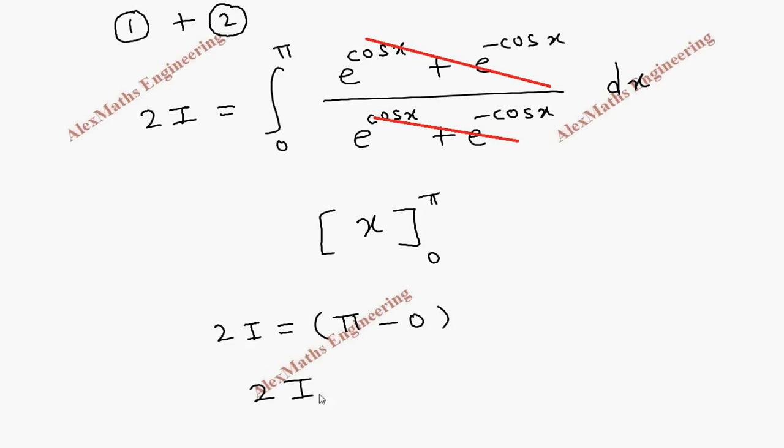So 2I equal to pi. From this, value of I is pi by 2.